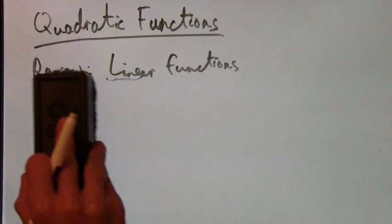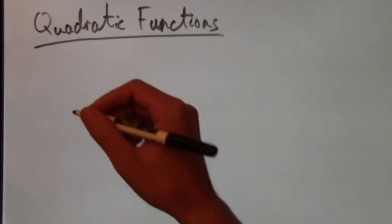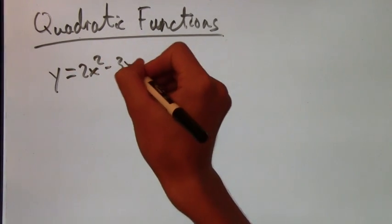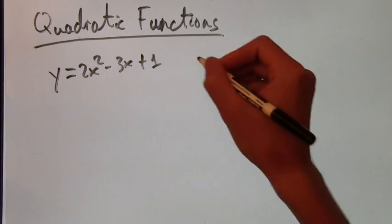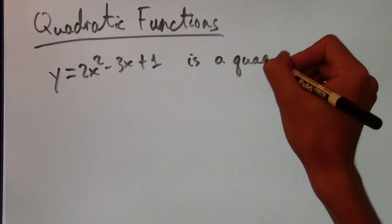So now, what is a quadratic function? Well, an example of a quadratic function could be y equals 2x squared minus 3x plus 1. The difference is that there's an x squared now.